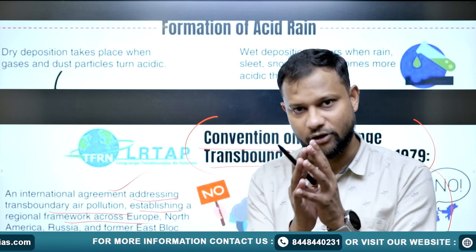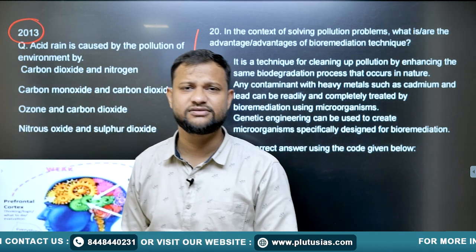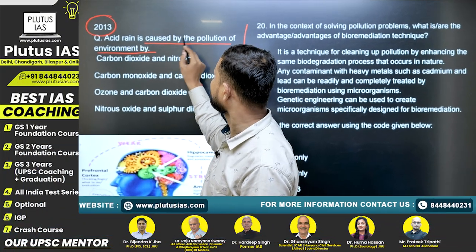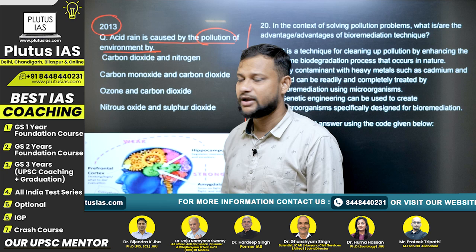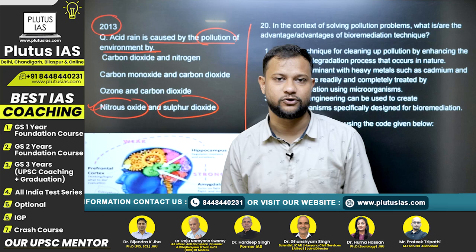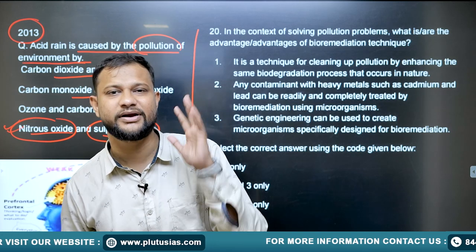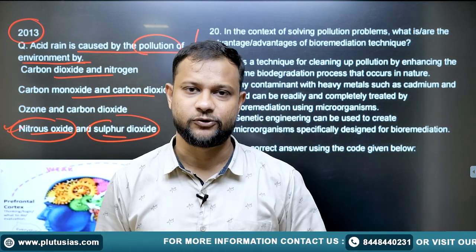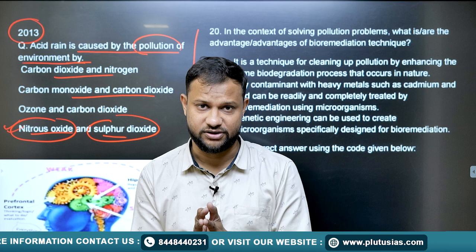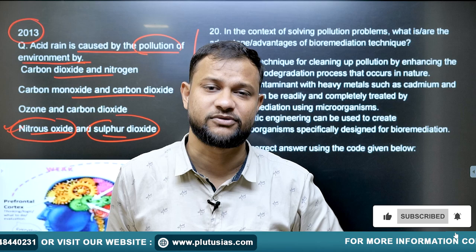A UPSC 2013 exam question asked what acid rain is caused by, and the answer is nitrous oxide and sulfur oxide. Do not go for carbon dioxide or carbon monoxide — these two are the main prominent reasons. I hope you now have clarity on acid rain, its types, the reasons for it, and its impacts. If you still have any doubts, please comment in the comment box. Please like and subscribe to our channel. Thank you!